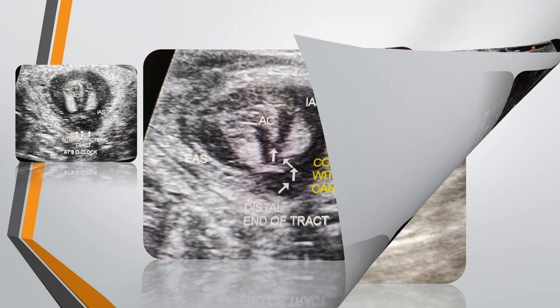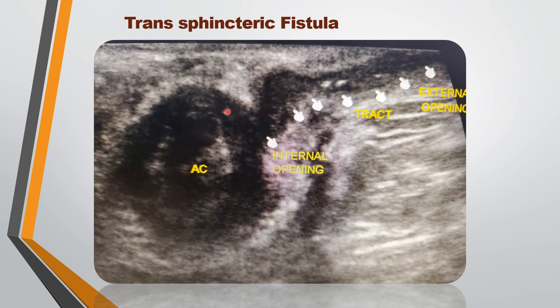The axial section of the anal canal shows the internal sphincter, the external sphincter, and a linear hypoechoic tract arising from the anal canal at about 2 o'clock position, extending laterally and opening into the external opening site. This is an active tract. The tract courses through the external sphincter — it has crossed the intersphincteric space and the external sphincter. This is therefore a transsphincteric type of fistula, with no abscess around the tract.